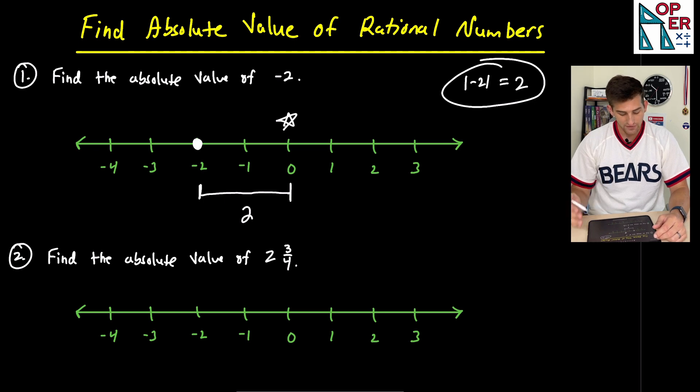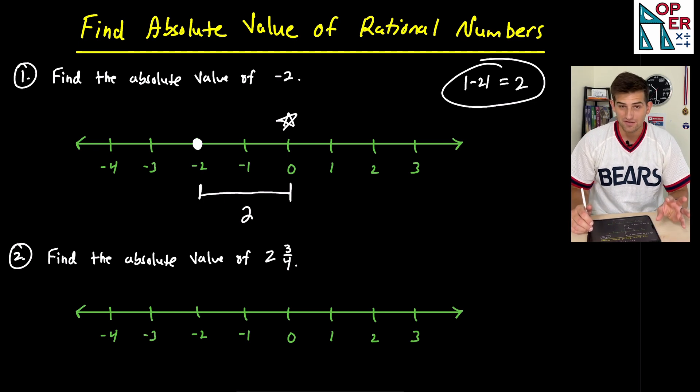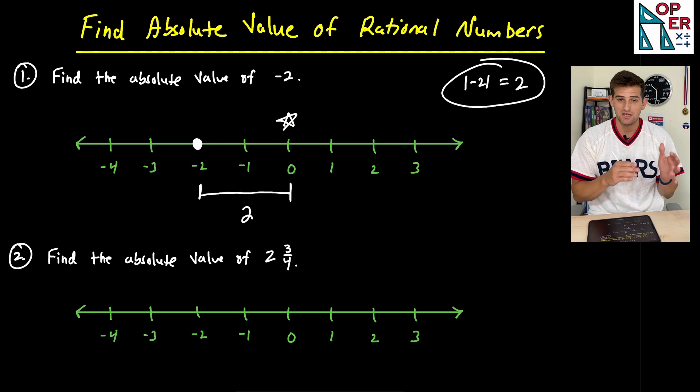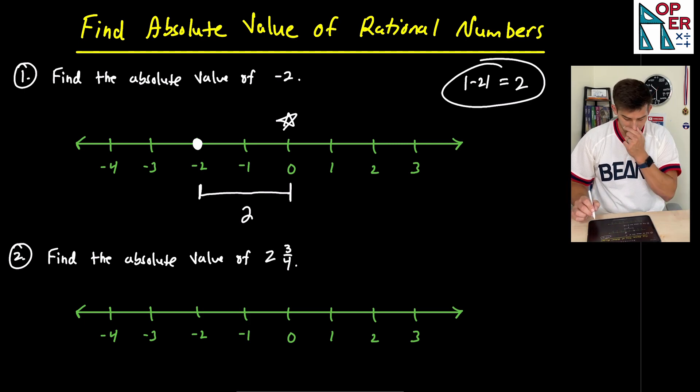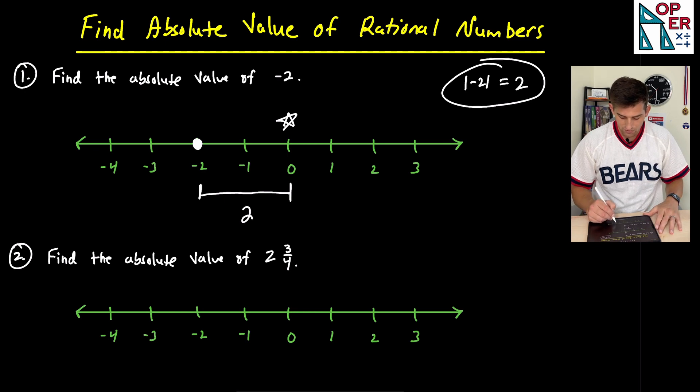Now we're going to find the absolute value of two and three fourths. So this is a fraction, it would be like 2.75, so it's still a rational number. We can plot this on our number line. So I see two, well, let's start off, let's put a star on zero.